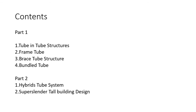The report consists of Part 1 and Part 2. Part 1 covers: tube-in-tube structures, frame tube, braced tube structure, and bundle tube. Part 2 covers hybrid tube system and super slender tall building design, which will be reported by Engineer Maria Olager.